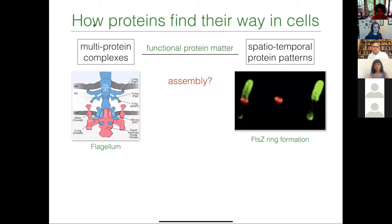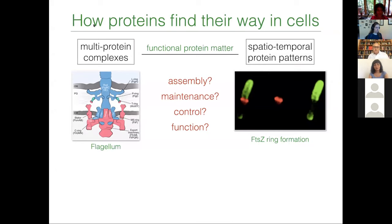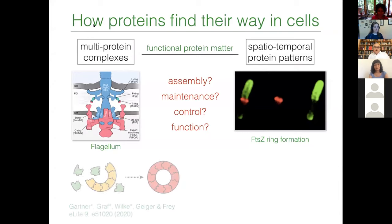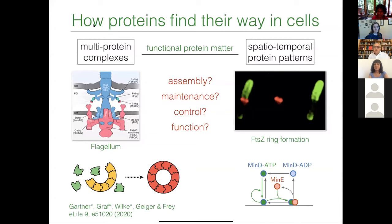You can ask how are these things assembled, how are they maintained, how can you actually control them? And maybe could you even explain the function of these biological machines and complexes in terms of physical principles? I won't have time to talk about self-assembly and the flagellum, but there's a recent paper we published where this is discussed, especially in context of the role of noise in finding a ring structure with a high yield. What I'd like to do today is focus on how you can explain protein patterns by accounting for the underlying reaction network and self-organization within the confinement of a cell.